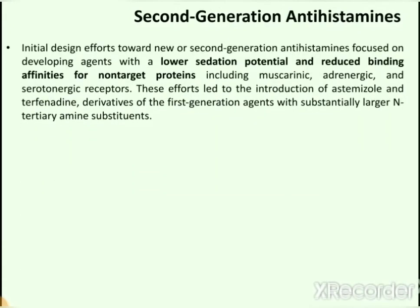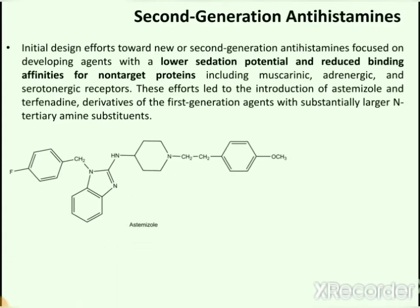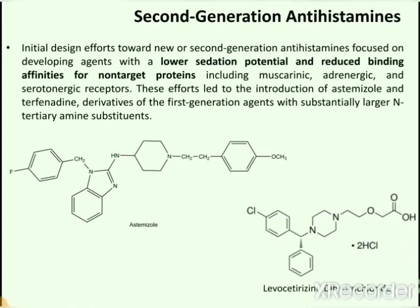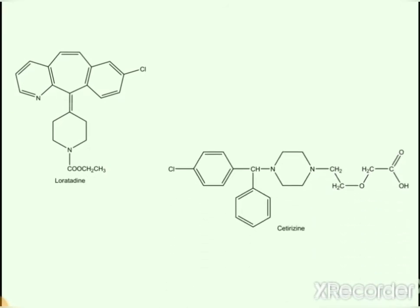Other drug candidates in the H1 antihistaminic category are second generation antihistamines. These are advanced antihistamines with lower sedation potential and reduced binding affinities for non-target proteins such as muscarinic, adrenergic, and serotonergic receptors. First drug of this category is astemizole, second is the widely used levocetirizine dihydrochloride, and others include loratadine and cetirizine.